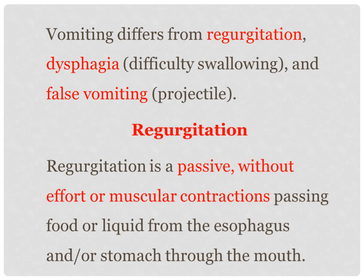Regurgitation is a passive — without effort or muscular contraction — passing of food or liquid from the esophagus and/or stomach to the mouth. It is an action like vomiting, but regurgitation is passive while vomiting is active. In vomiting there are spasmodic muscle contractions; in regurgitation there are not. In both vomiting and regurgitation there is passing of food material from either the esophagus or stomach.